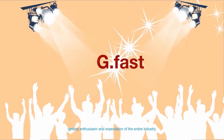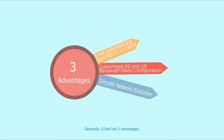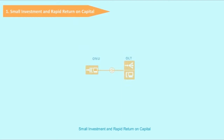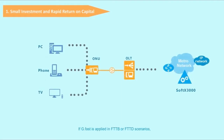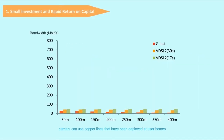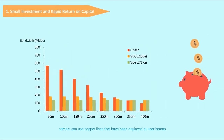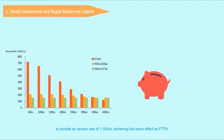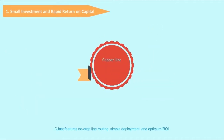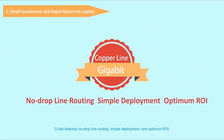Generally, G.fast has three advantages. First: small investment and rapid return on capital. If G.fast is applied in FTTB or FTTD scenarios, carriers can use copper lines that have already been deployed at user homes to provide an access rate of one Gigabit per second, achieving the same effect as FTTH. G.fast features no drop-line routing, simple deployment, and optimum ROI.